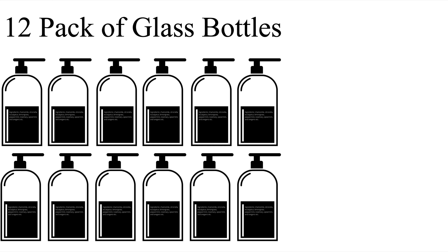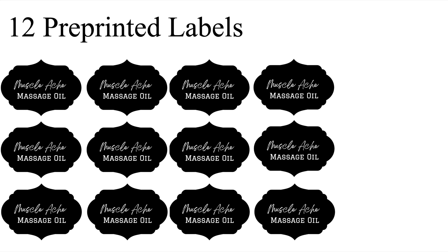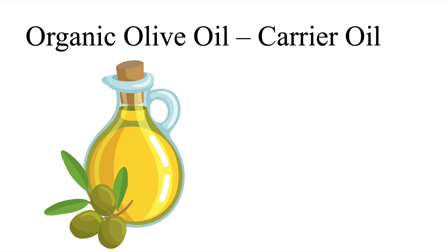Let's say we purchase these glass bottles at a wholesale price of $30 for a 12-pack of 12-ounce glass bottles. We would also like to purchase labels so we can label our products with our logo, the ingredients of the product, and the product's name. Let's say we find a wholesale price of $6 for three pre-printed sheets. We also need to purchase a carrier oil — we decide to go with a high-grade organic extra virgin olive oil, purchased at a wholesale price of $60 for seven pounds.